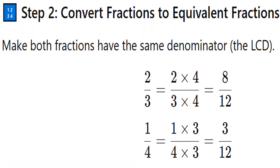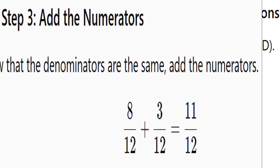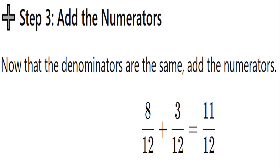Step 2: Convert fractions to equivalent fractions. Make both fractions have the same denominator — the LCD. 2 thirds multiply by 4, and 1 quarter multiply by 3. Now that the denominators are the same, add the numerators. 8 plus 3 is equal to 11. Write the same denominator as 12. Do not add the denominators.